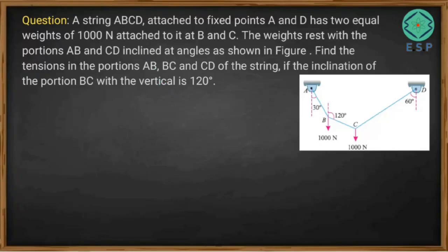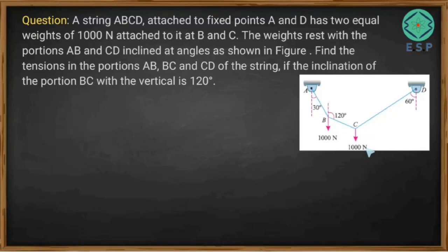Let's solve one more problem based on coplanar concurrent forces. A string ABCD is attached to fixed points A and D, with two equal weights of 1000 Newton attached at B and C. The weights rest with portions AB and CD inclined at the angles shown in the figure, where BC makes 120 degrees with the vertical, and the other angles are 60 degrees and 30 degrees.